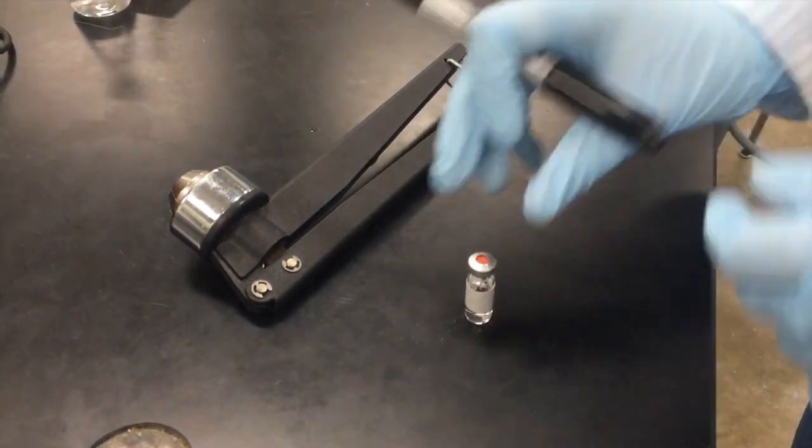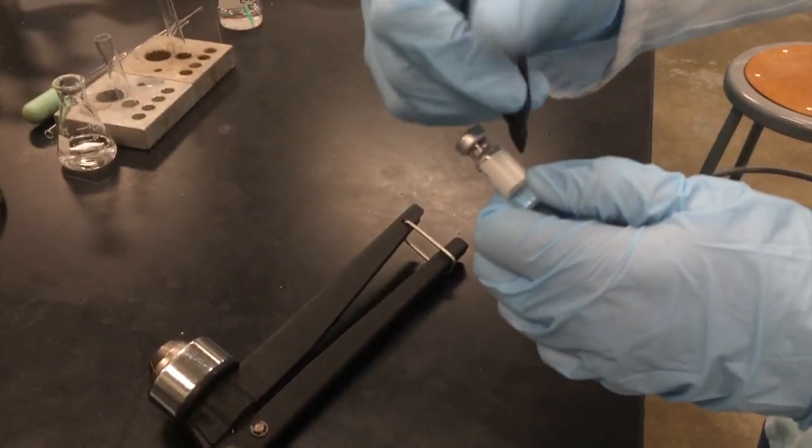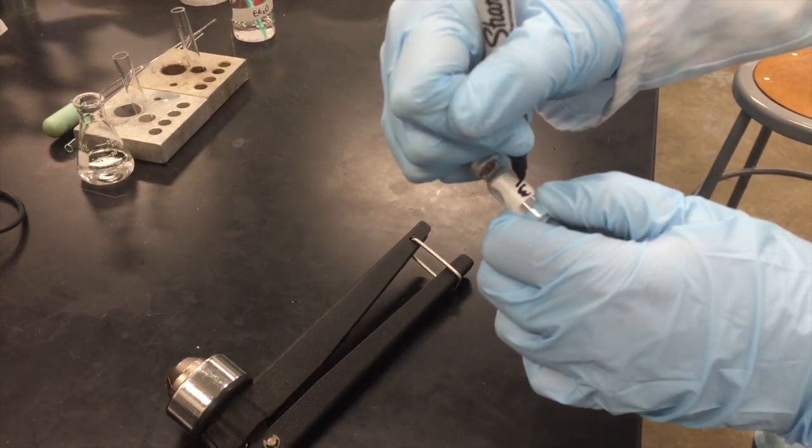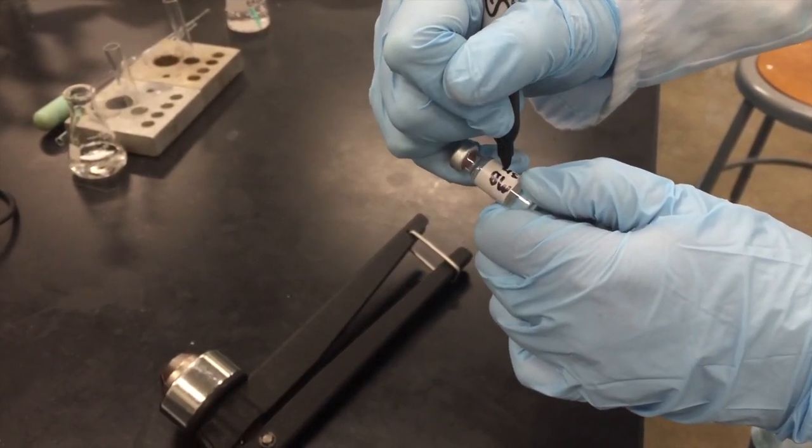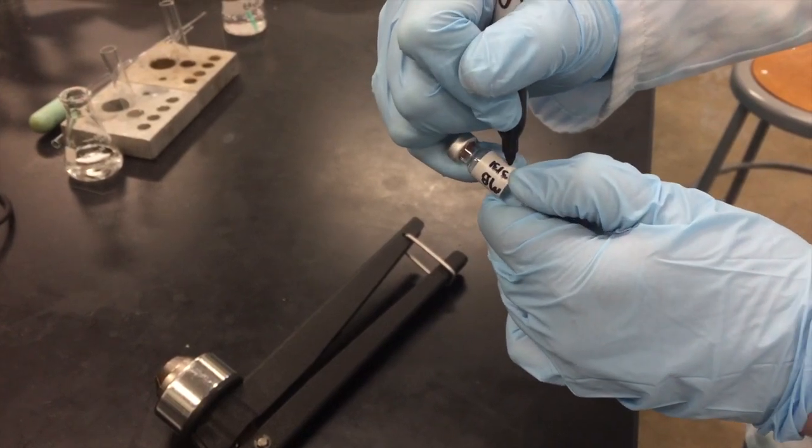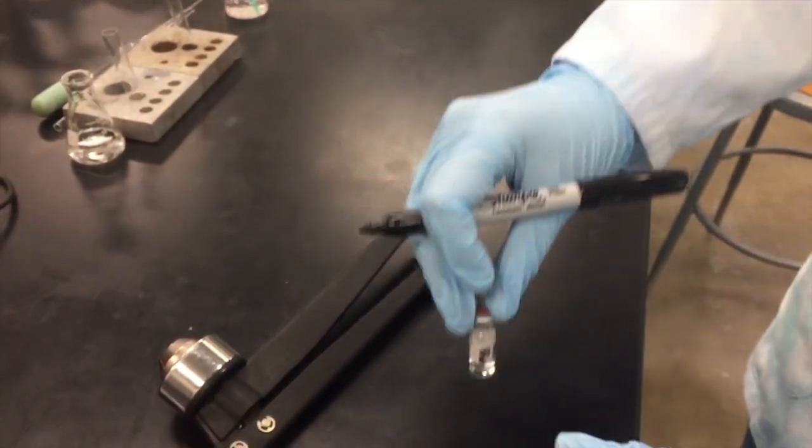Label the vial by attaching tape and writing your initials, section number, and date. Now your sample is ready for GC-MS.